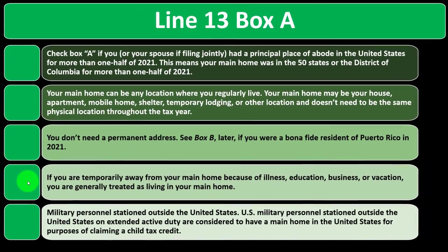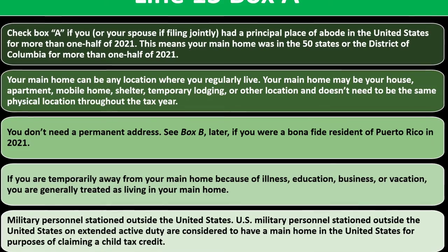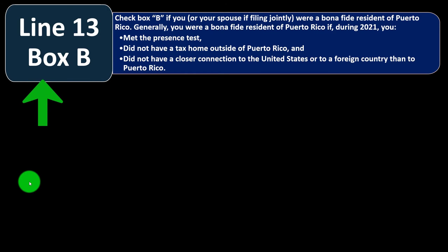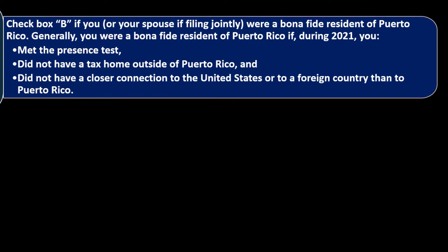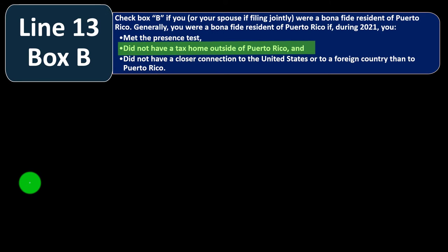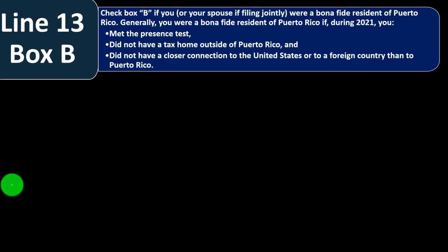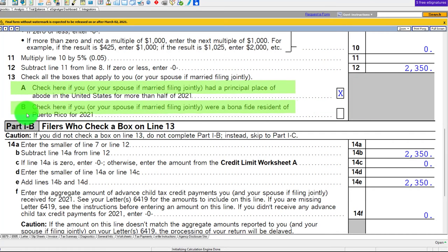Military personnel stationed outside the United States on extended active duty are considered to have a main home in the United States for purposes of claiming the child tax credit. Check Box B if you or your spouse, if filing jointly, were a bona fide resident of Puerto Rico — generally if during 2021 you met the presence test, did not have a tax home outside of Puerto Rico, and did not have a closer connection to the US or a foreign country than to Puerto Rico. There are three scenarios: checking A, checking B, or checking neither.